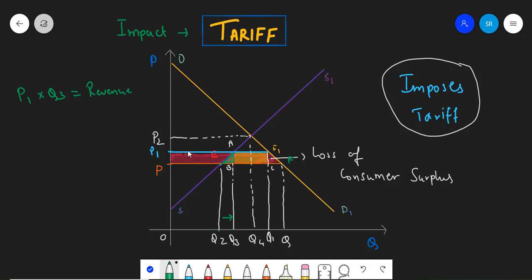However, the supply curve is also the marginal cost curve. Hence, the part A, E, B showcases the increased cost to the producers.